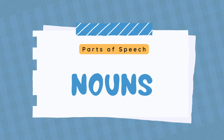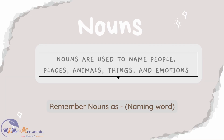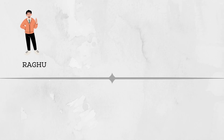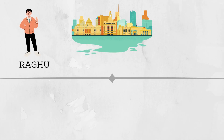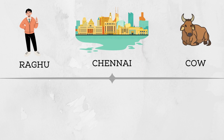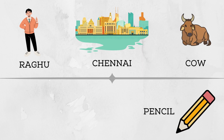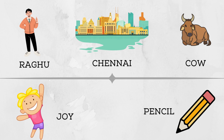Let's start with the basics and understand what nouns are. A noun is a part of speech that names a person, place, animal, thing or an emotion. Basically anything that names something is a noun — whether you are talking about Raghu who is a person, Chennai which is a place, Cow which is an animal, Pencil which is a thing, or Joy which is an emotion. Nouns form a large proportion of English vocabulary and they come in a wide variety of types.